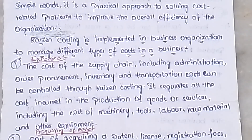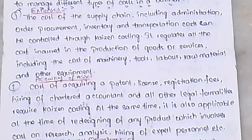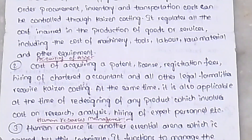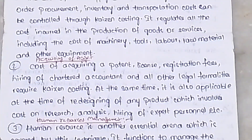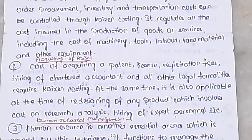The second scope area is acquiring of assets. The cost of acquiring assets such as patents, licenses, registration fees, hiring of expert accounts, and other legal formats are covered under this area.